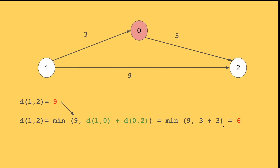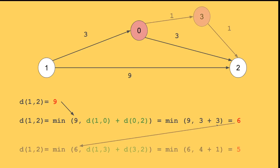Now if I tell you there's yet another node you can use on the path between 1 and 2, I can say the distance can be updated: the previous distance 6 versus going from 1 to 3 then 3 to 2, which is 4 plus 1. The minimum of 6 and 5 is 5, so I can go 1→0→3→2 at a cost of 5.